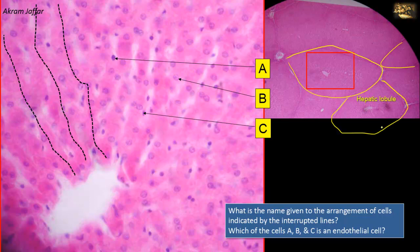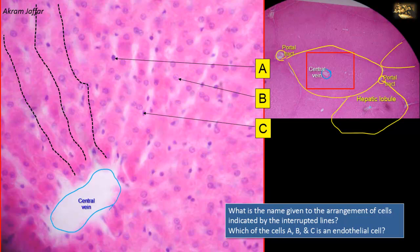The hexagon is outlined by connective tissue and by portal tracts. This is a portal tract, and this is another portal tract, which are located at the angles usually. The hepatocytes are arranged around a centrilobular venule or central vein. This is the central vein shown here, and this is another central vein.